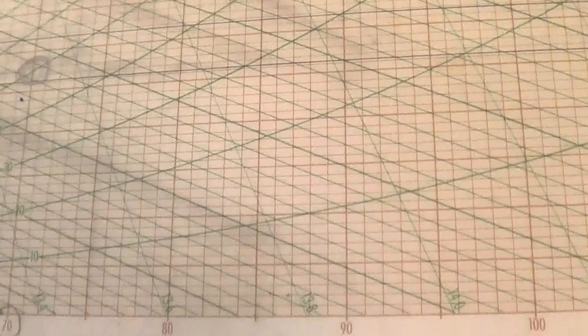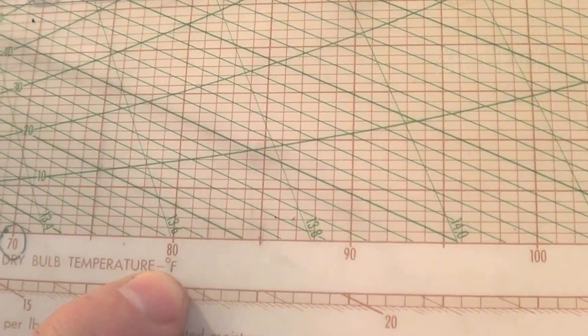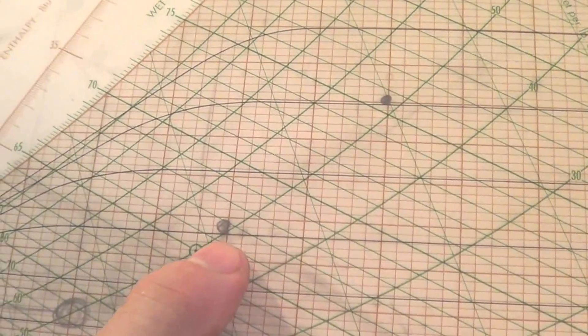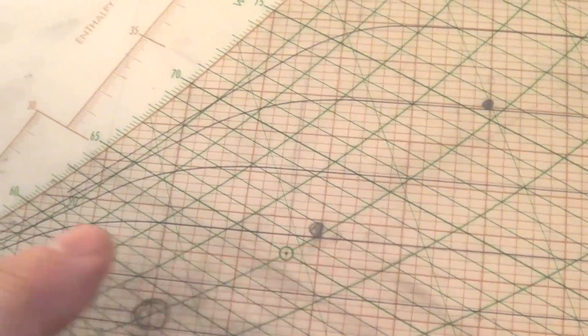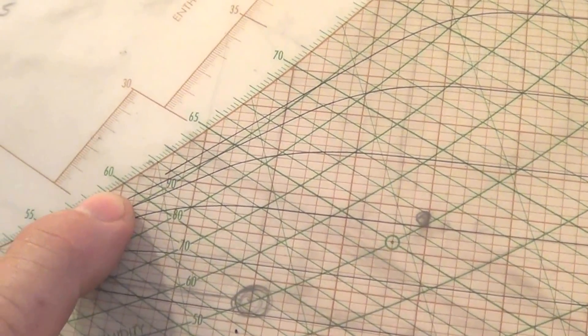So if you take 80 degrees F and you took 50 percent humidity, crude rule of thumb is the dew point is 20 degrees less, 60.